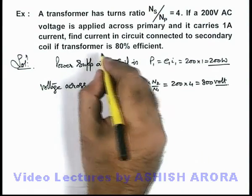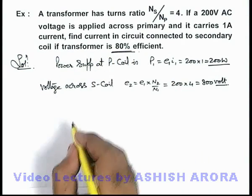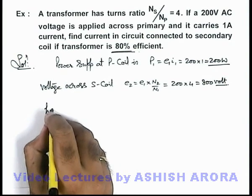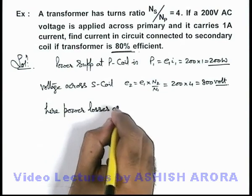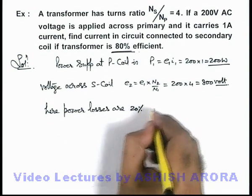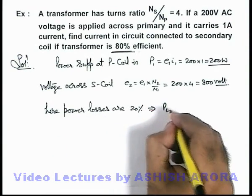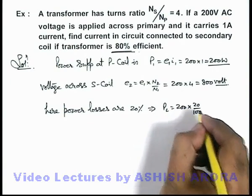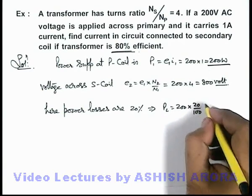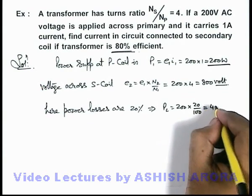We are given that the transformer is 80 percent efficient, so we can write here power losses are 20 percent. This implies the power loss will be 200 multiplied by 20/100. As the input power is 200 watt, this will be 40 watt.